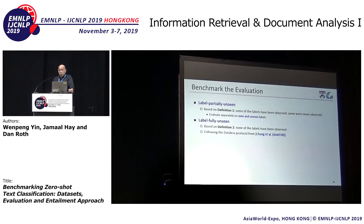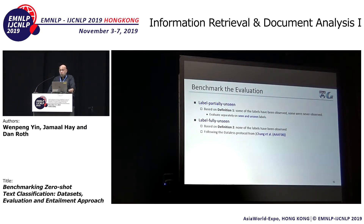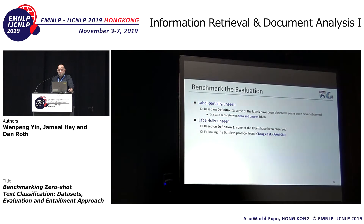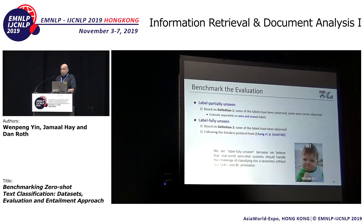We are dealing with two types of evaluation. The first, which we call partially unseen, corresponds to my first definition: some labels have been observed, some were never observed. We evaluate separately on seen and unseen labels. The second, which is more challenging and more interesting, is fully unseen. This is basically the definition from our work ten years ago, which we called data-less. None of the labels have been observed, and we still want to classify into these labels. We prefer this second type — it is a realistic setting where we handle classifying into a taxonomy without any task-specific annotation, because we understand what the task is.